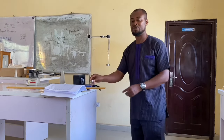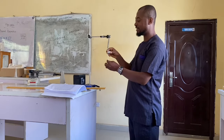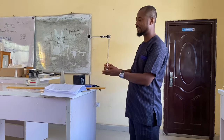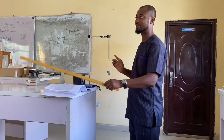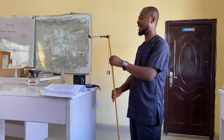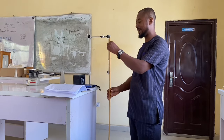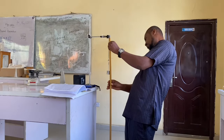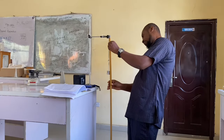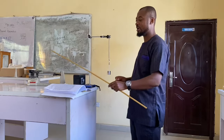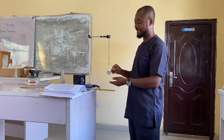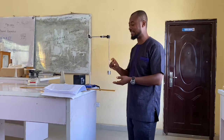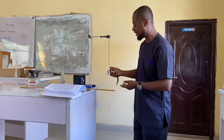The next thing is to add another mass. Each of these masses is 100 grams, so I add another mass making it 200 grams. Thereafter, I take my E again — now it's 17.4. So I have 17.4, and I record it against 200 grams.